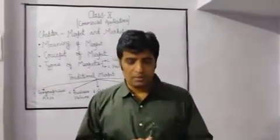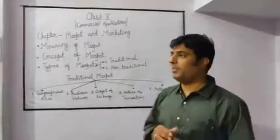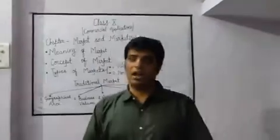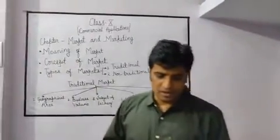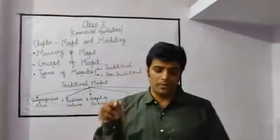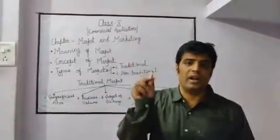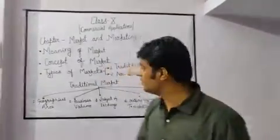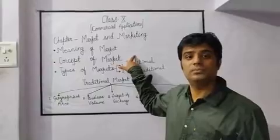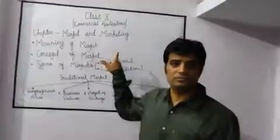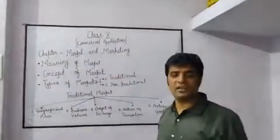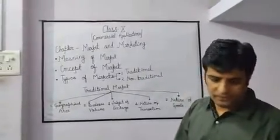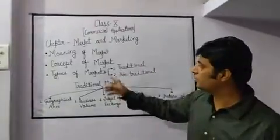That is market. But in economics, if we say what is market, then according to Philip Kotler, a market is a set of all actual and potential buyers. Next is concept of market. Different definitions reveal many concepts of market.